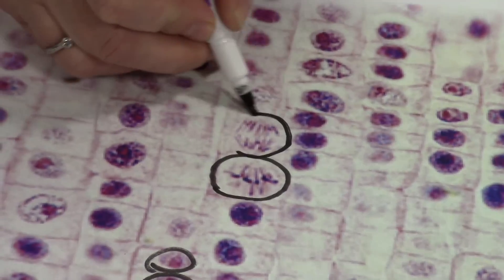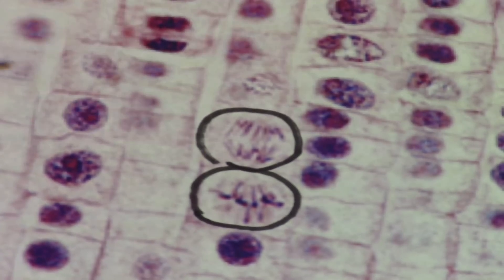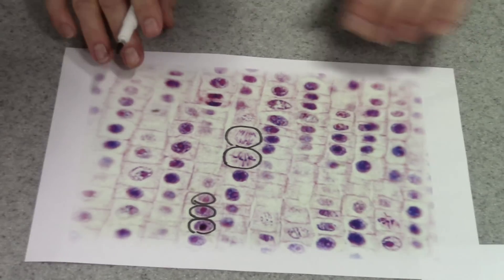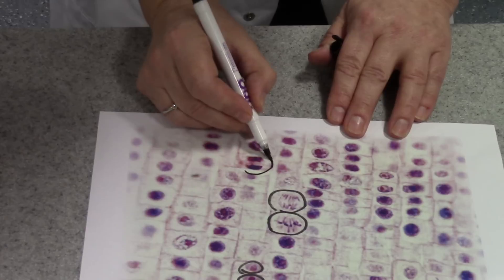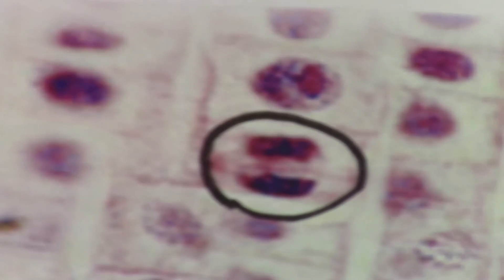This cell here, you can clearly see the chromosomes appear to be moving to the opposite ends of the cell, so this is a cell in anaphase. And if we look carefully, here there's a cell that's almost finished mitosis. Clearly, we've got two nuclei forming there. That is telophase.